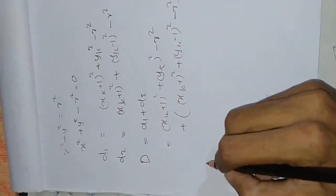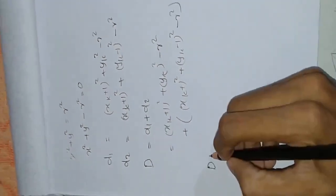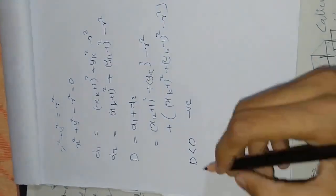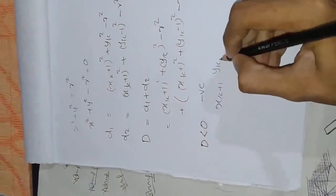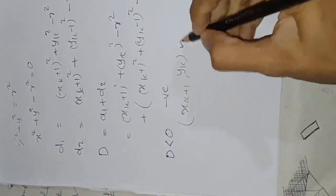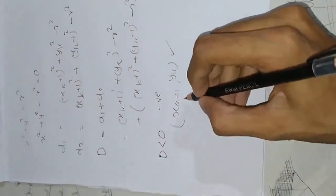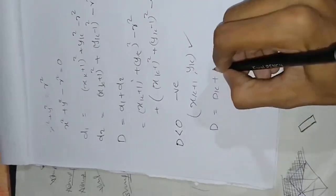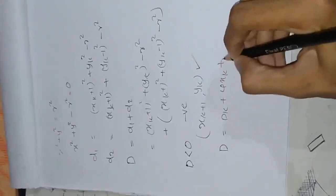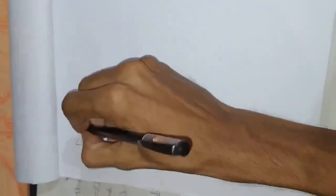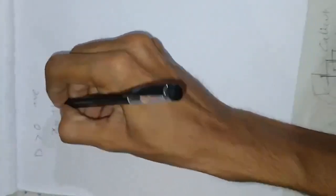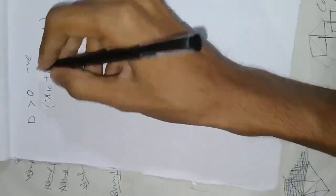This is the decision parameter D. If D is negative, then we choose the next point xk plus 1, yk. The decision parameter update formula is: Dk plus 1 equals Dk plus 4xk plus 6.